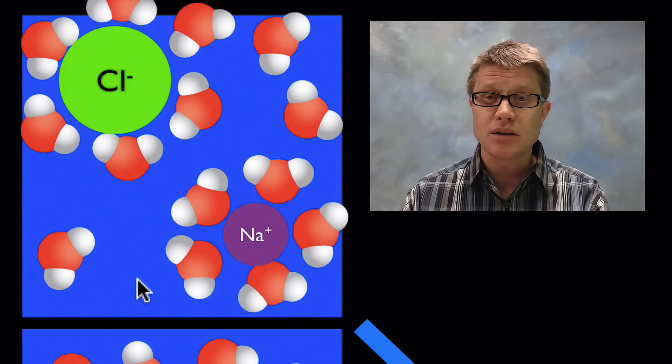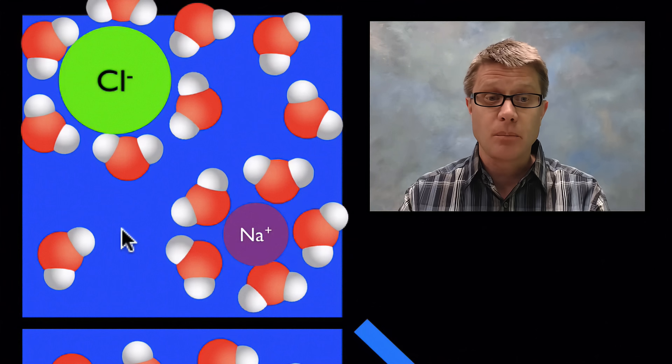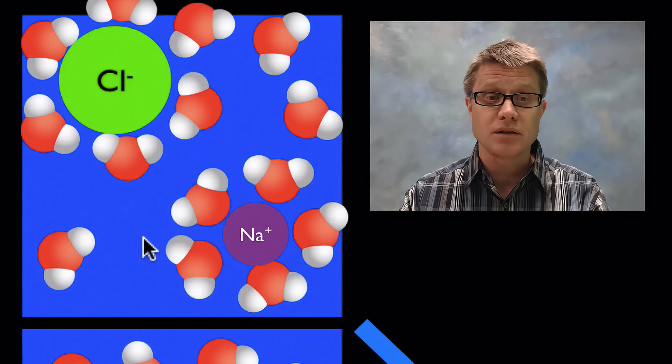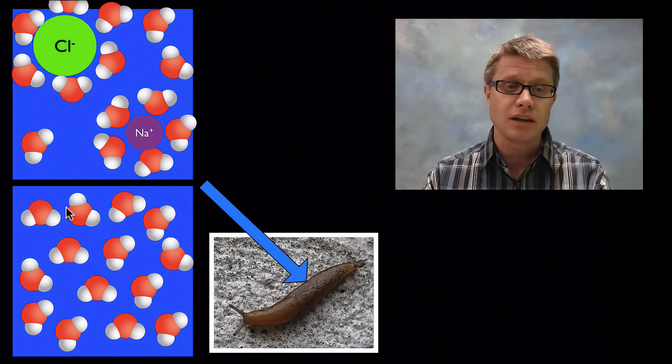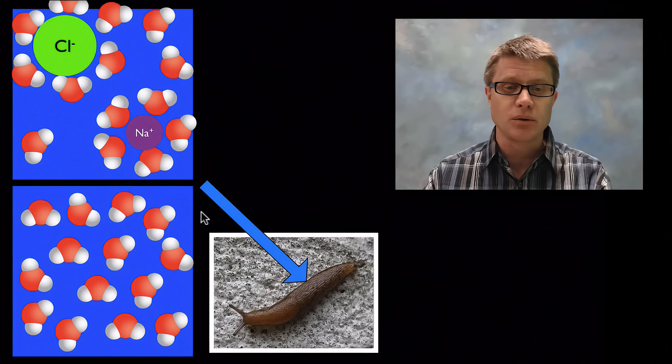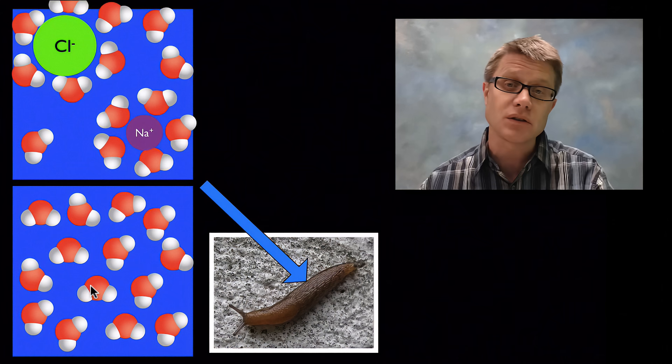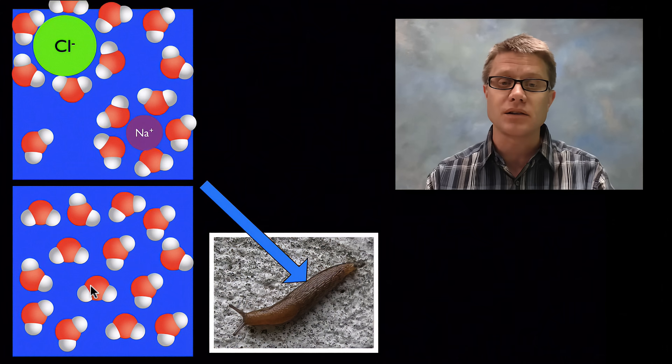So it decreased the water potential above the slug or on the surface of the slug. Now we have areas where the water inside the slug can move into that. It's more radical than I have in this simple diagram. So what it's going to do is it's going to move water outside the slug.